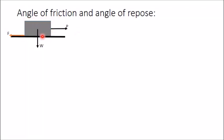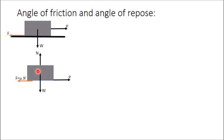Here I have taken one example in which a block of weight W is kept on a horizontal plane and is applied by a force P which is just sufficient to move this block towards the right direction. In that case, friction force will be maximum. If you draw the free body diagram of this block, you will get one normal reaction N, weight W in the vertical downward direction, force P towards the right direction, and maximum friction force equal to μN, where μ is the coefficient of friction between these two surfaces. Note that normal reaction and friction force are always normal to each other.